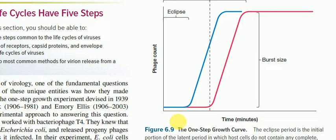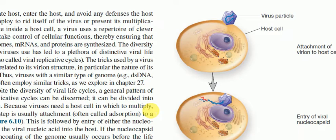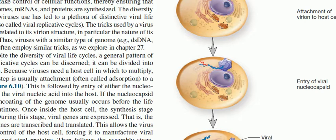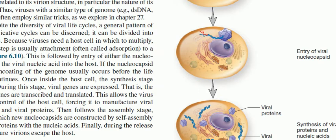Now let's see how a bacterial phage works to create disease. Here is the papilloma virus. The papilloma virus sits on the wall of a cell — the plasma membrane of a eukaryotic, human cell, since this is human papillomavirus. The capsid is inserted into the lumen of the cell, and the genome is excreted out of the icosahedron.